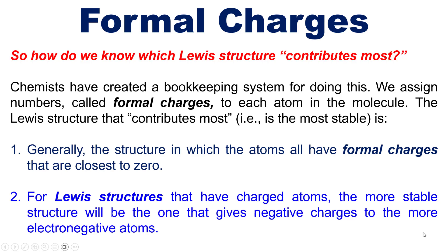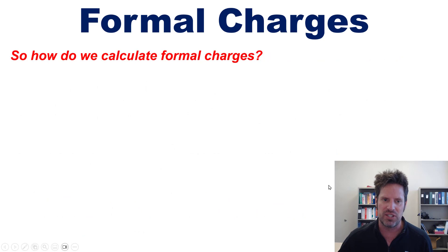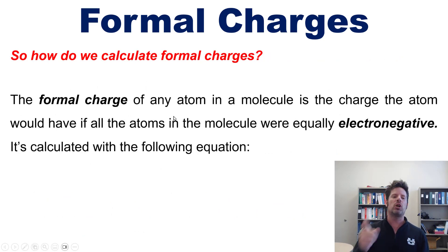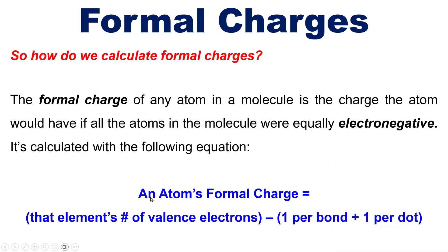And a positive charge to the less electronegative atoms. So you might ask: how do we calculate this formal charge? One way to think about it is this: the formal charge of any atom in a molecule is the charge that atom would have if all the atoms in the molecule were equally electronegative. There's a simple equation: an atom's formal charge in any Lewis structure equals that atom's number of valence electrons minus the sum of one per bond plus one per dot.